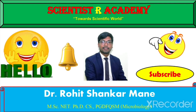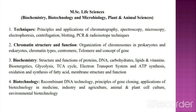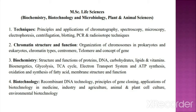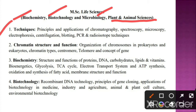If you are new to our channel Scientists R Academy, please subscribe and click on the bell icon for more updates. For PG Life Sciences there are different subjects like biochemistry, biotechnology, microbiology, and plant and animal sciences. There are a total of 8 units, and in this slide we are going to discuss the first 4 units.